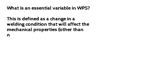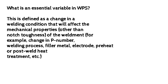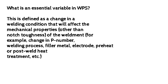What is an essential variable in WPS? This is defined as a change in a welding condition that will affect the mechanical properties — other than notch toughness — of the weldment. For example, a change in P number, welding process, filler metal, electrode, preheat or post-weld heat treatment, etc.